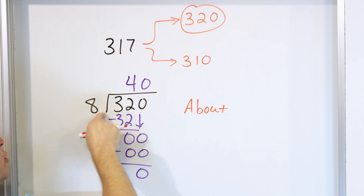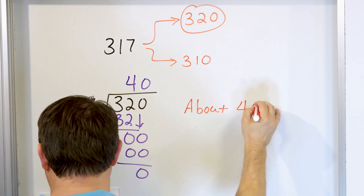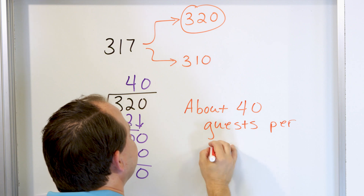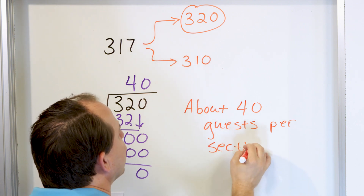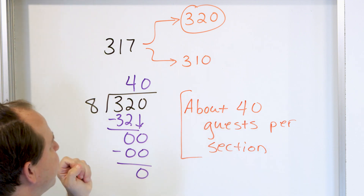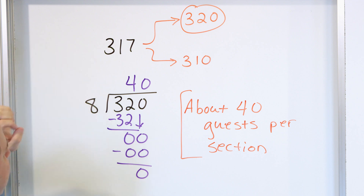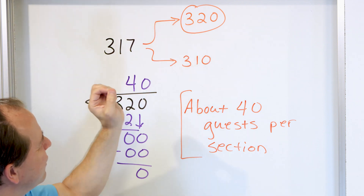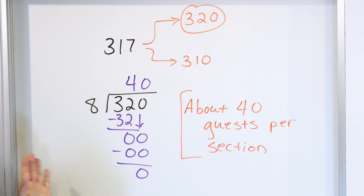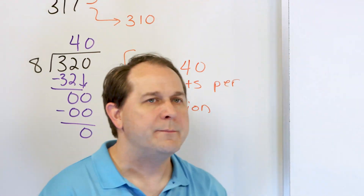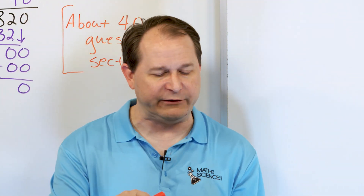We took the number of people divided by eight rooms — about 40 guests per section or per room. This word 'about' means this is not an exact answer. If we needed an exact answer, we would take 317 and divide by eight. The problem tells us to estimate by rounding, which makes the division part easier. So we know the answer is not exactly 40, but it's a really good estimate of how many people are going to be in each section.